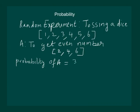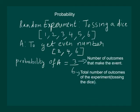As 3 by 6, since three elementary events satisfy our event out of the total six possible events. Note that 3 is the number of outcomes that make the event A, while 6 is the total number of outcomes of the experiment, tossing the dice. Solving it further, we get 1 by 2. And we can say that the probability of getting even number on tossing a dice is 1 by 2.